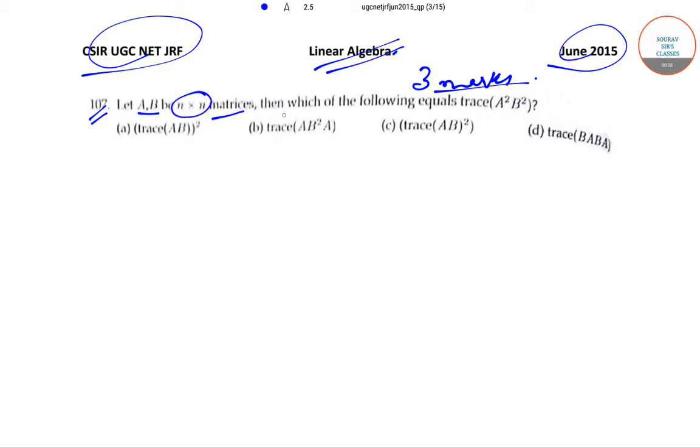n cross n matrices. Then which of the following equals trace of A² B²? Option (a) trace of (AB)². Option (b) trace of AB²A. Option (c) trace of AB². And option (d) trace of BAB. So these are the four options.